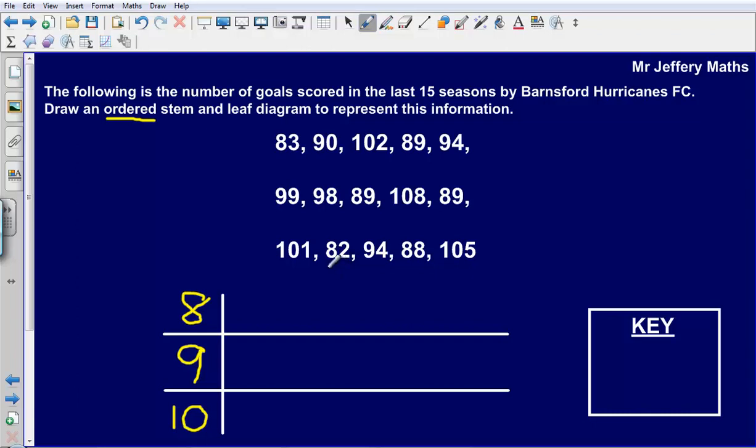So we will start with the smallest one, we have got 82 here. And what I like to do as I go along is cross them out as you go. This just helps you make sure that you have not missed any out. So 82, 83, next one looks to be 88, next one 89 and we have got three of those.